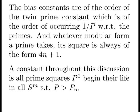The Bias constants are of the order of the twin prime constant, which is of the order of occurring at about 1 over P with respect to the primes. And whatever modular form a prime takes, its square is always of the form 4n plus 1. A constant throughout this discussion is all prime squares P squared begin their life in all S models such that P is greater than P_m.